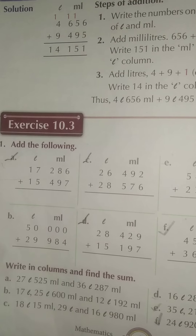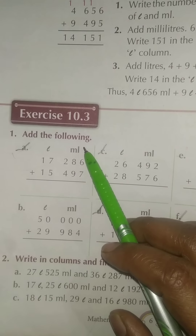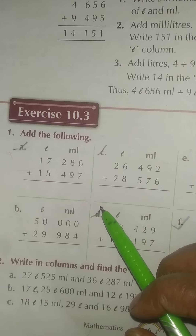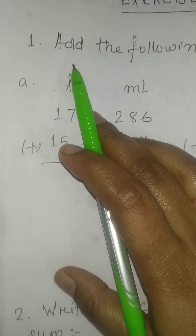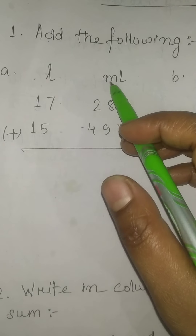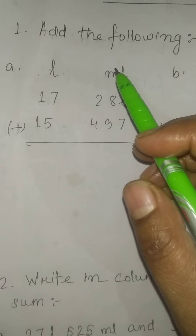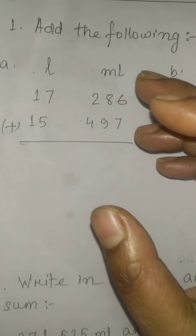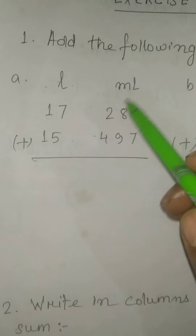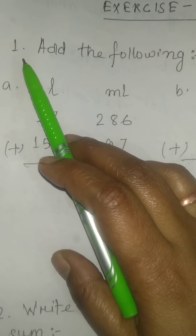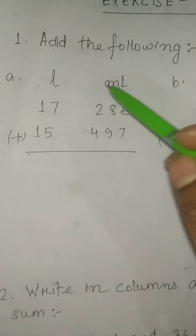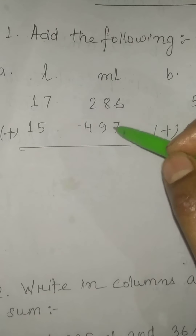So question number 1 is given at the following. These questions you can solve in your classwork copy also. I am going to show you in the copy. Whenever you start writing any sums in your copy, at first you write your date, then you write CW or HW and the exercise number. So here I have written exercise 10.3, question number 1, and the numbers are already arranged in the litre and milliliter columns.